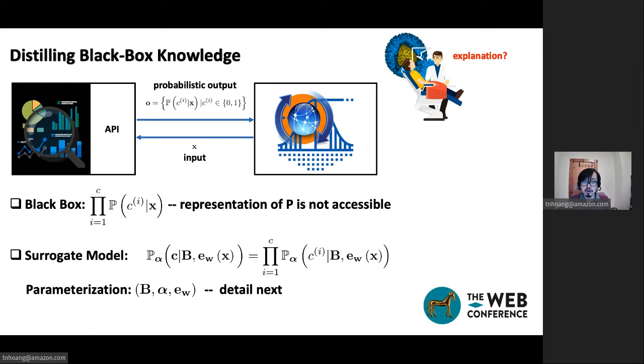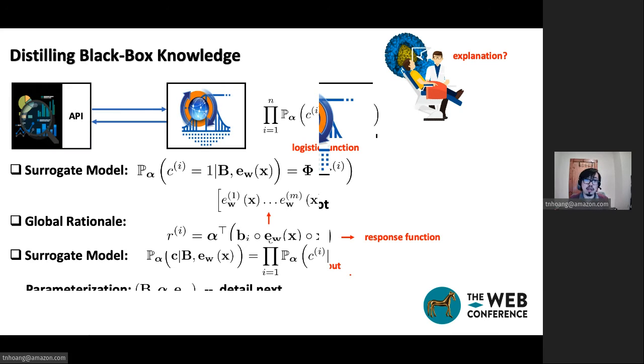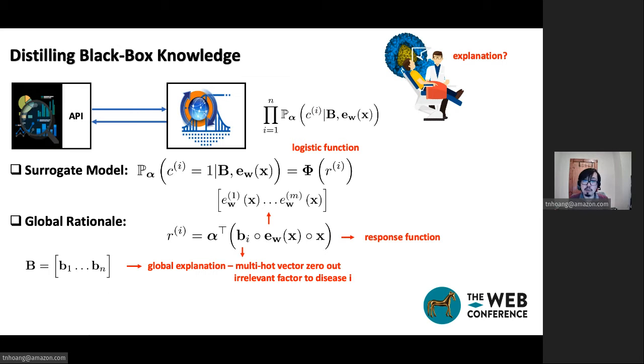One extra assumption that we impose here on the black-box is that it factorize across the different disease model. So for our surrogate model, we will also factorize across the disease model. So in what is going on next, I will just describe the parameterization of a single component.